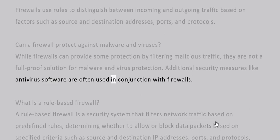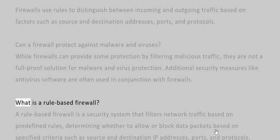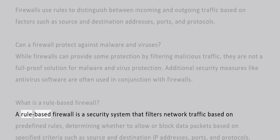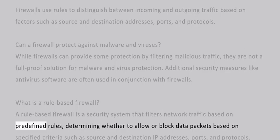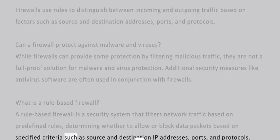What is a rule-based firewall? A rule-based firewall is a security system that filters network traffic based on predefined rules, determining whether to allow or block data packets based on specified criteria such as source and destination IP addresses, ports, and protocols.